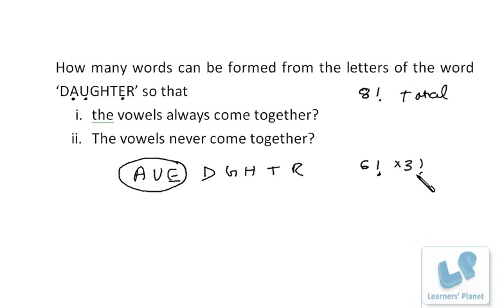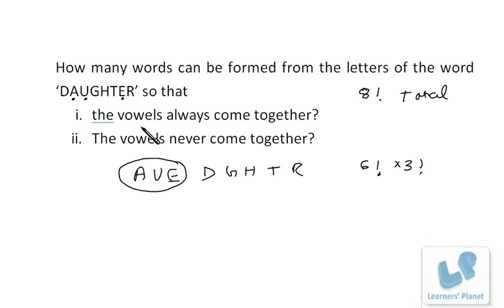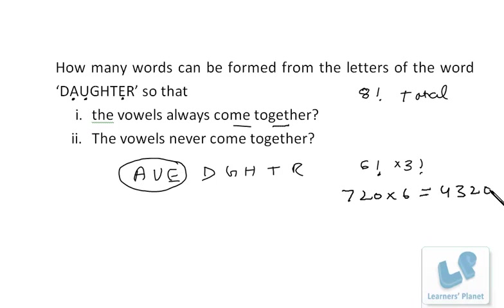So the six letters can be arranged in 6 factorial ways, and inside the vowel group, A, U, E can be mutually arranged in 3 factorial ways. In all these arrangements they will be together but the internal order will vary — and we only require that they come together, not in a certain order. So the answer is 6 factorial × 3 factorial = 4320.